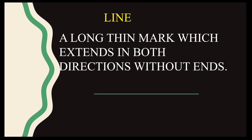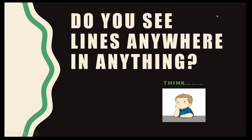As we can see lines in many objects around us. Can you see? You just look around yourself. See the door, window, wall, almira, table, chair - everything has a line. Do you see any lines anywhere in anything? Just look around.